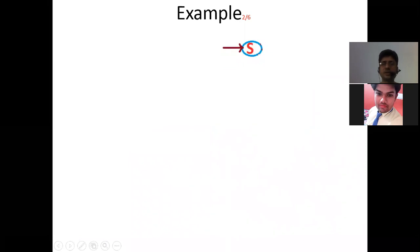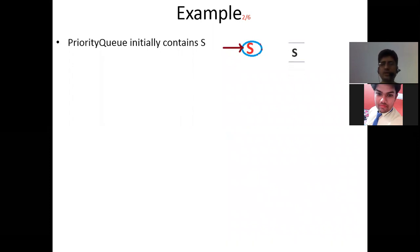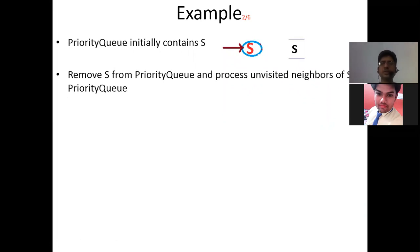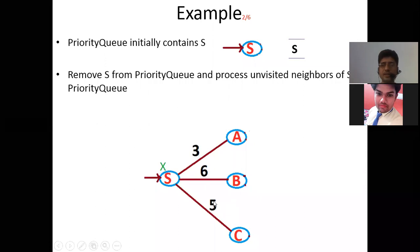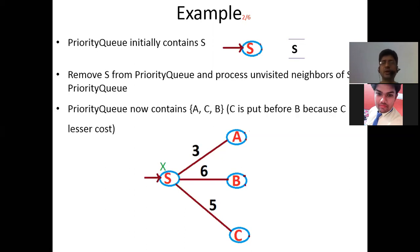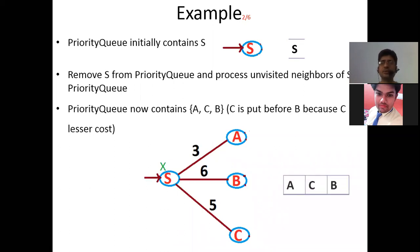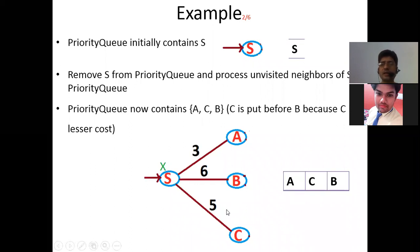Step 1: Put source S into the priority queue. Step 2: Remove S and add its unvisited neighbors A, C, B to the priority queue in ascending order of cost — A (cost 3), C (cost 5), B (cost 6). The difference from BFS is that we don't add A, B, C in arbitrary order; we order them by cost using the prior information.